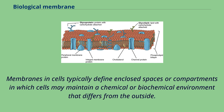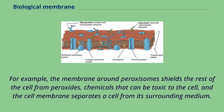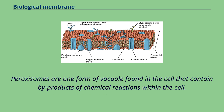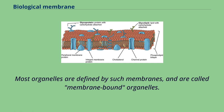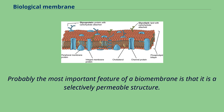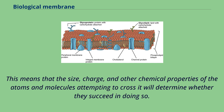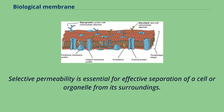Membranes in cells typically define enclosed spaces or compartments in which cells may maintain a chemical or biochemical environment that differs from the outside. For example, the membrane around peroxisomes shields the rest of the cell from peroxides — chemicals that can be toxic. Peroxisomes are one form of vacuole found in the cell. Most organelles are defined by such membranes and are called membrane-bound organelles. Probably the most important feature of a biomembrane is that it is a selectively permeable structure — the size, charge, and other chemical properties of atoms and molecules attempting to cross it will determine whether they succeed.